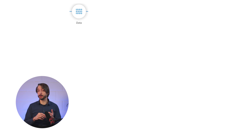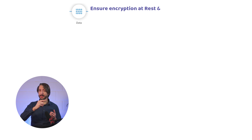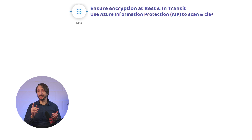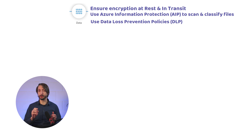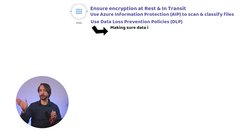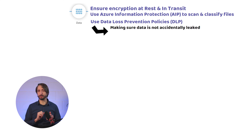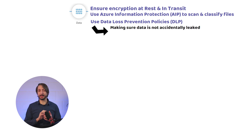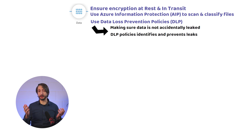For data, we can ensure it is always encrypted, both at rest and in transit. We should use tools such as Azure Information Protection, AIP, to scan and automatically classify and protect files. Data loss prevention, DLP, policies should also be put in place to ensure data is not accidentally leaked outside. For example, a human resources employee might accidentally attach the wrong file containing personal data to an email, hit send in Outlook — but before the email is actually sent, the DLP policy identifies the breach and prevents the email from being sent.